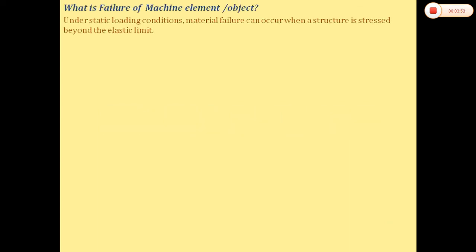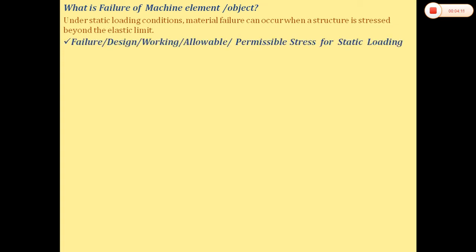Now we will see static failure. Failure of a machine element or object: under static loading conditions, material failure can occur when the structure is stressed beyond its elastic limit. Every object has its elastic limit, and if stressed beyond it, we consider it a failure. This is called failure stress, design stress, working stress, or allowable/permissible stress.